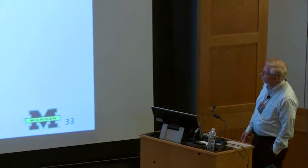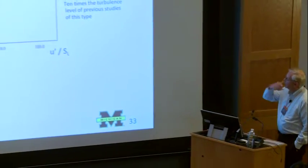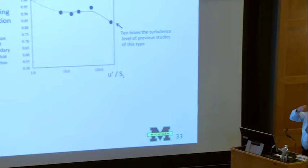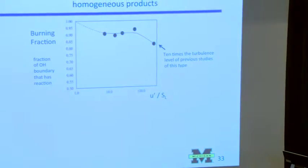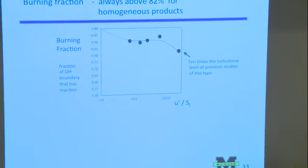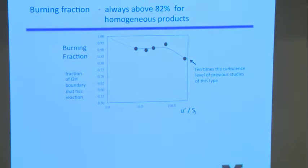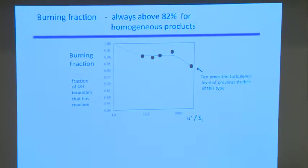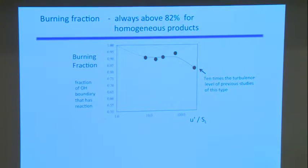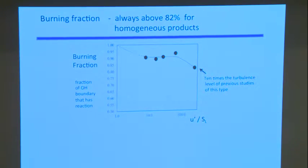In this high-velocity Bunsen burner that we've been running, my students measured the burning fraction. And what they're finding is that even at very high turbulence levels that are ten times the level of turbulence in previous studies, we still get at least 82% of the region burning. So we can't really call this broken. It's starting maybe to break, but it's not really broken.